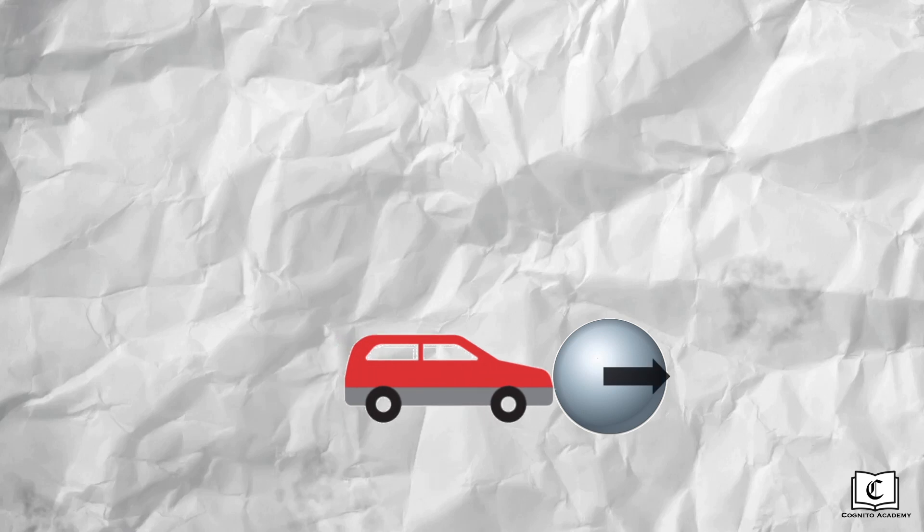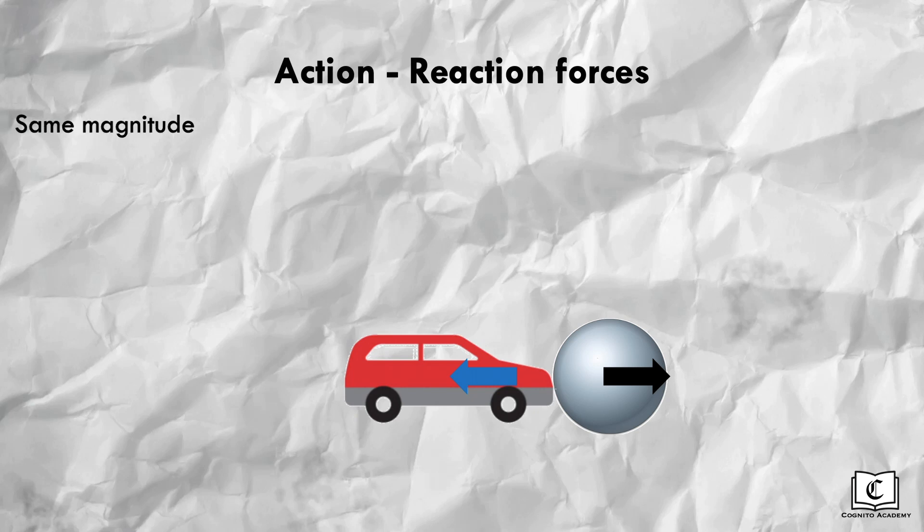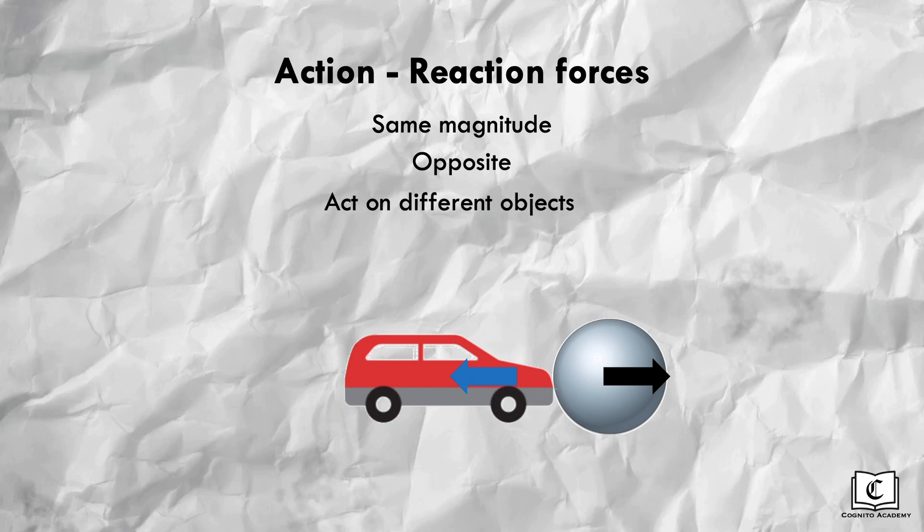In this scenario, the car drives towards the steel ball and collides with it. The two arrows show the action-reaction forces. The action-reaction pairs have the following characteristics: both forces are equal in magnitude and opposite in direction. Action-reaction pairs must also act on different objects, and as such they do not cancel each other out.